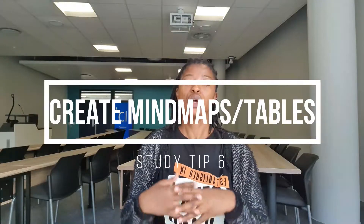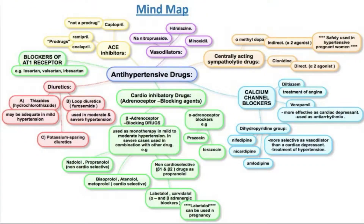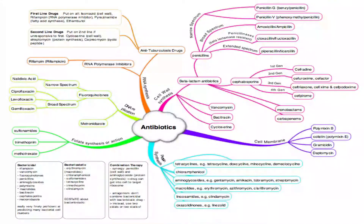The next thing is to create mind maps. Going back to cardiac drugs — write 'cardiac drugs' in the center, then branch out the different classes of drugs that fall under that. Mind maps help bring everything to life on one page so that you're not overwhelmed with everything.